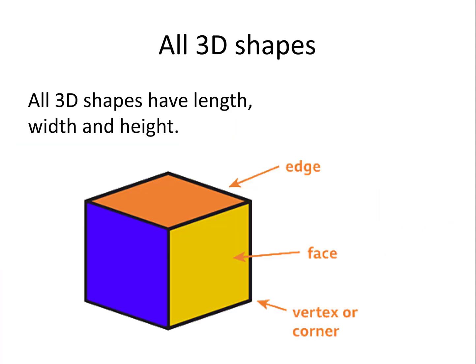All 3D shapes have length, width and height. They have a number of faces, that is a flat side, a number of edges, that is a line where two faces meet, and a number of vertices, that is corners, where three or more faces meet. The singular of vertices is vertex, or one corner.